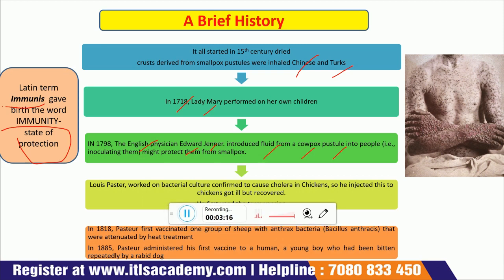In 1888, Pasteur first vaccinated one group of sheep with anthrax bacteria Bacillus anthracis that were attenuated by heat treatment. Later, in 1885, Pasteur administered his first vaccine to a human — a young boy who had been bitten repeatedly by a rabid dog.